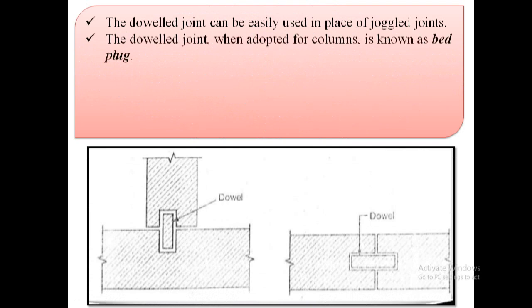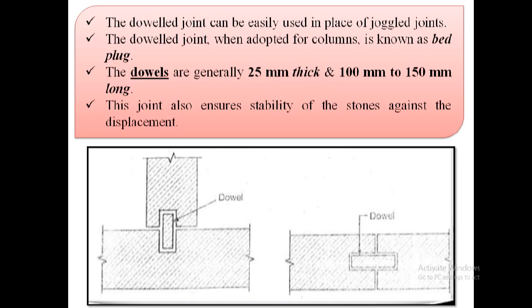The dowel joint, when adopted for columns, is known as bed plug. The dowels are generally 25 mm thick and 100 mm to 150 mm long. This joint also ensures stability of the stones against the displacement.